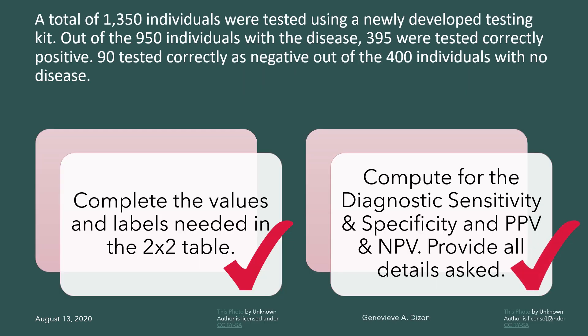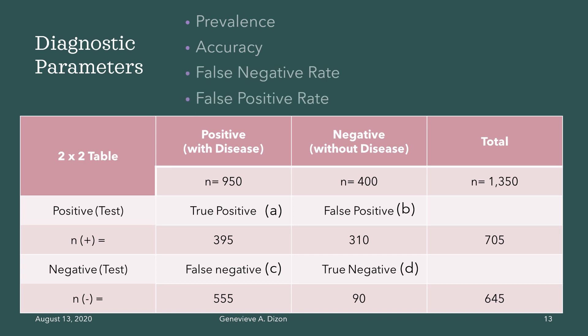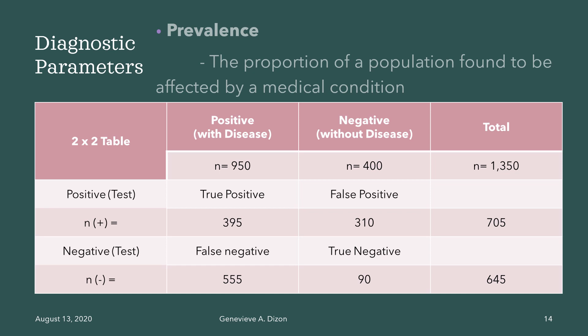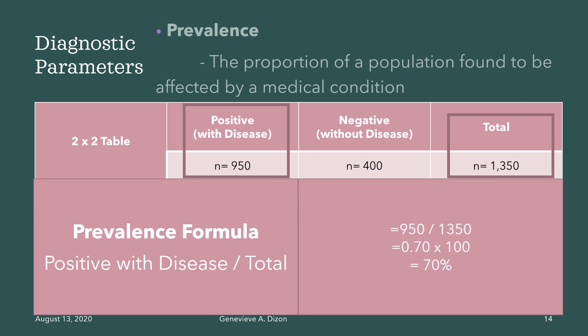That completes the computation for sensitivity, specificity, PPV, and NPV. Other parameters from the 2x2 table include prevalence, accuracy, false negative rate, and false positive rate. Prevalence is defined as the proportion of a population found to be affected by the medical condition. The formula is positive individuals with disease divided by the total population: 950 divided by 1,350. The prevalence is 70%, meaning 70% of the total population have the disease or condition.